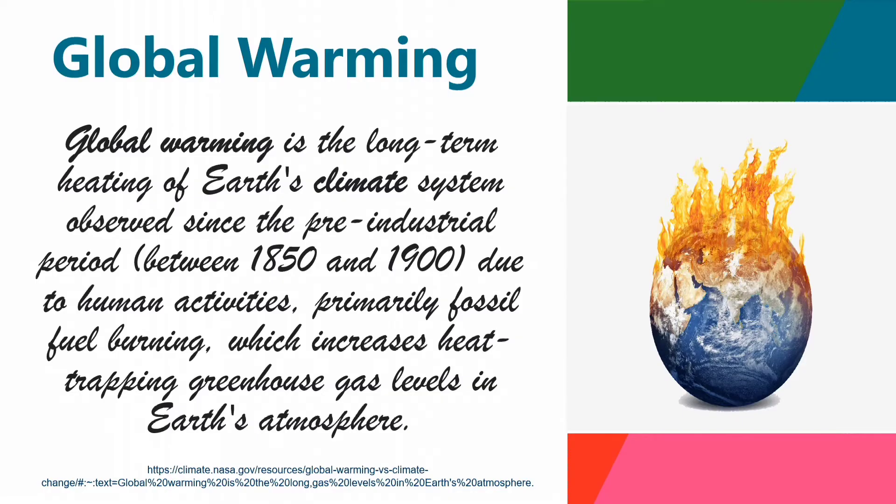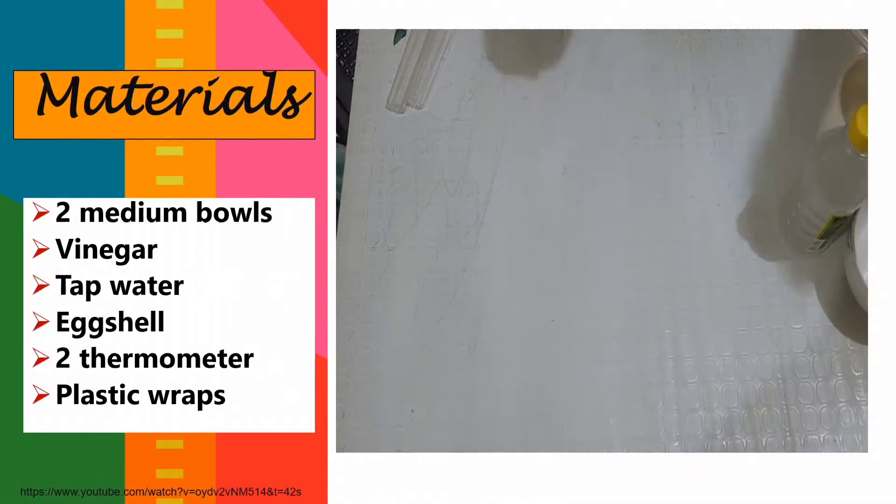Global warming is the long-term heating of Earth's climate system observed since the pre-industrial period between 1850 and 1900 due to human activities, primarily fossil fuel burning, which increases heat-trapping greenhouse gas levels in Earth's atmosphere.